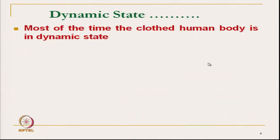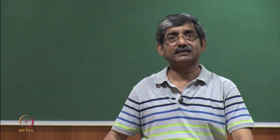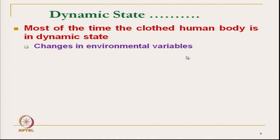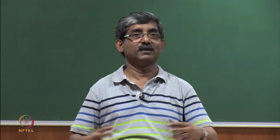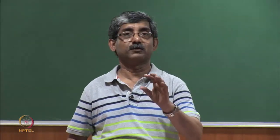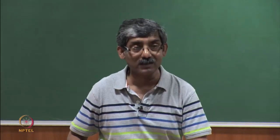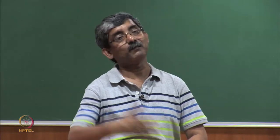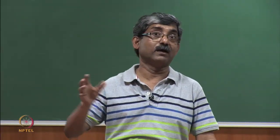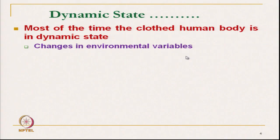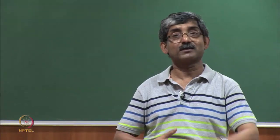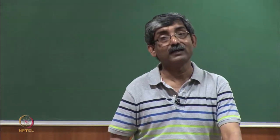Coming to the dynamic state — in most conditions, the clothed human body is in a dynamic state while walking or doing activities. Changes in environmental variables such as temperature, relative humidity, and wind speed continuously affect heat and mass transmission. This dynamic state exists apart from the standard atmosphere or standard test chamber. Normal environment is always changing, and that directly affects heat and mass transmission. The air enclosed within the clothing — the microclimate — is always under dynamic condition.